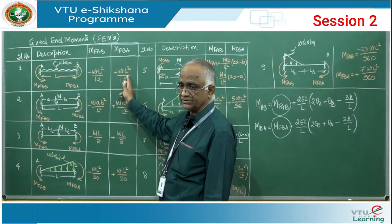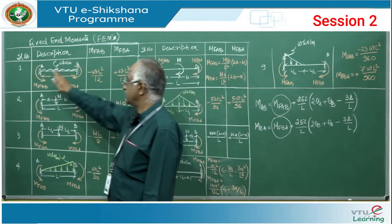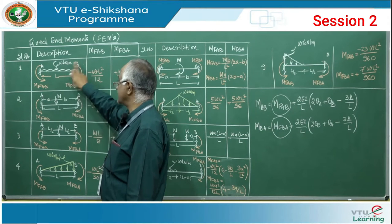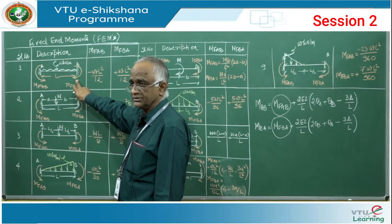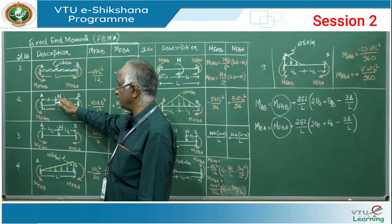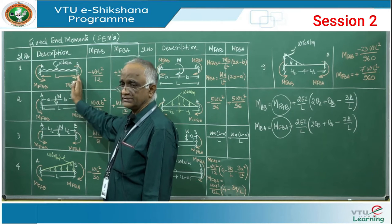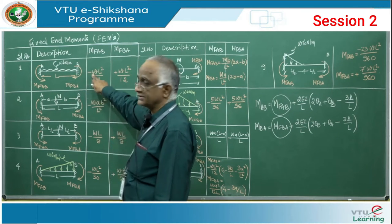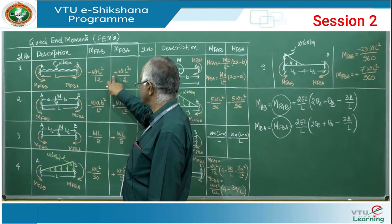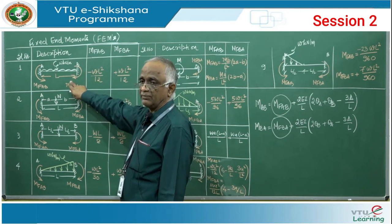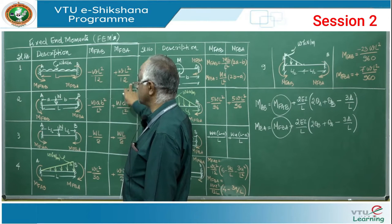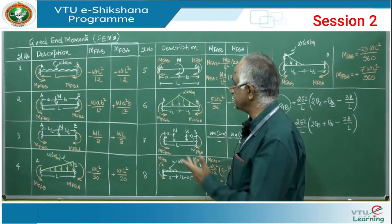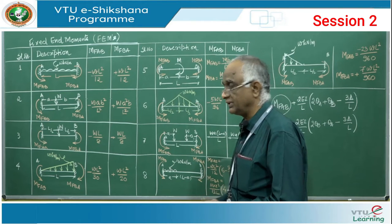For UDL, the left-hand fixed-end moment is considered negative and the right-hand positive. M_FAB equals minus WL²/12, and M_FBA equals plus WL²/12. The load acting downwards gives left negative, right positive. If you have a span with UDL, remember these two terms: minus and plus WL²/12.